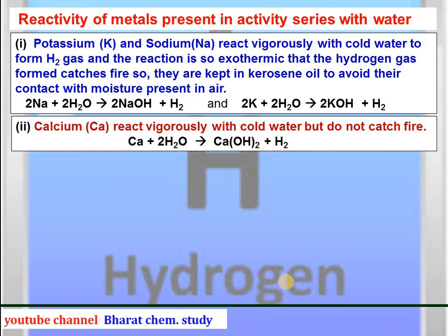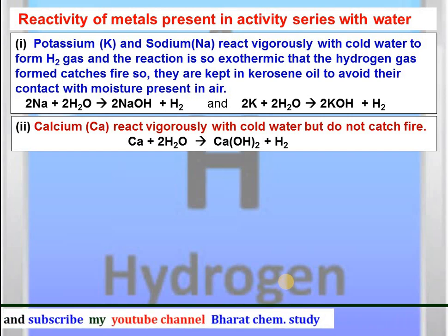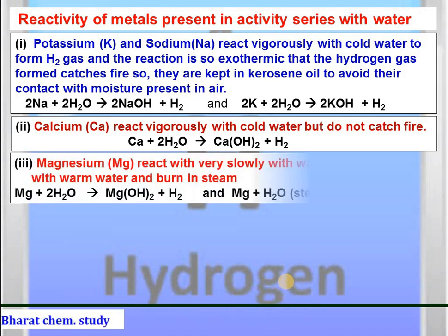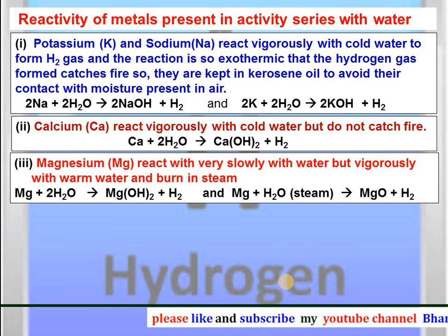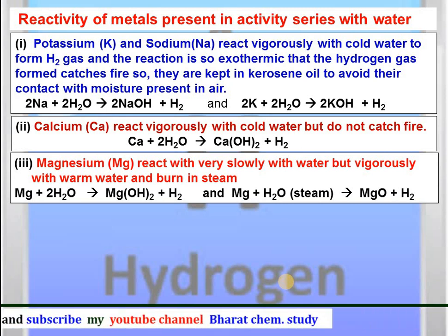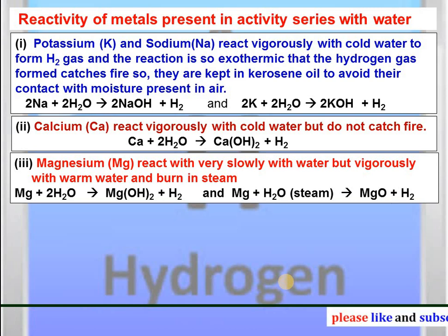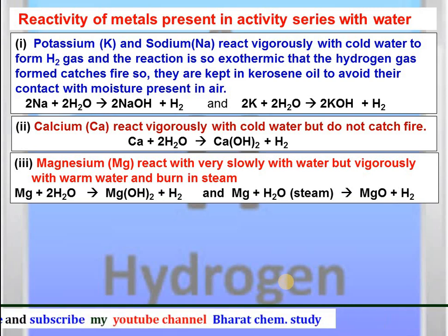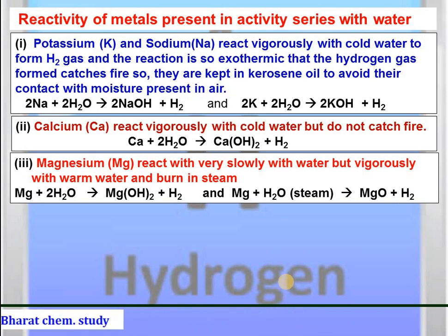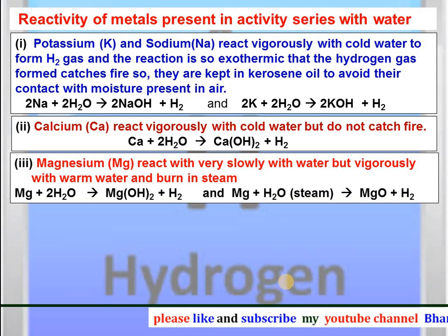Second point: calcium also reacts vigorously with cold water but does not catch fire. The equation is: calcium reacts with two molecules of water to form calcium hydroxide and hydrogen gas. Magnesium reacts very slowly with cold water but vigorously with warm water and burns in steam. When magnesium reacts with boiling water it forms magnesium hydroxide and hydrogen gas, but when magnesium reacts with steam it forms magnesium oxide and hydrogen gas. This is very important to note down.